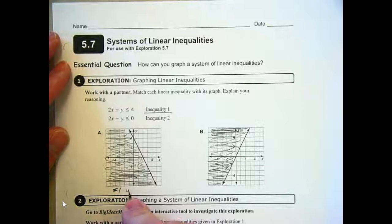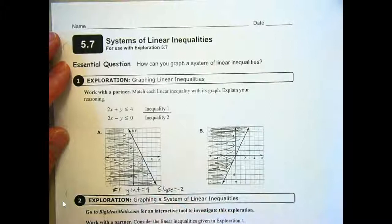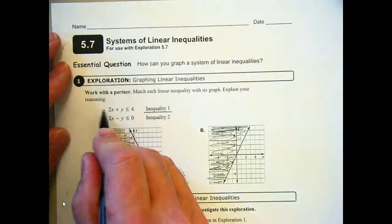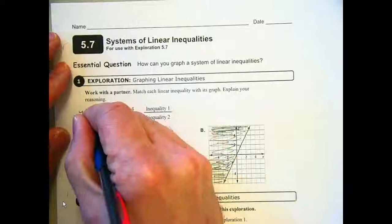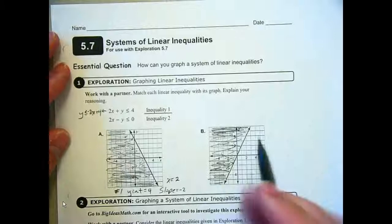The y-intercept is 4. The slope is negative 2. You could also think the y-intercept is 2. Excuse me, the x-intercept is 2. So no matter how you did it, if you changed this to slope-intercept form and said y is less than or equal to negative 2x plus 4, that would be one way to think about it. Or if you used x and y-intercepts.